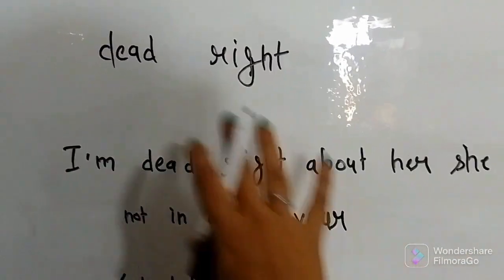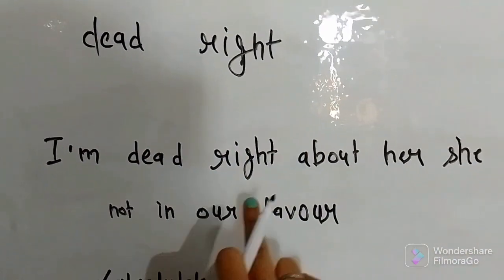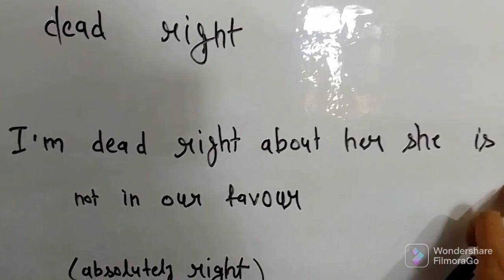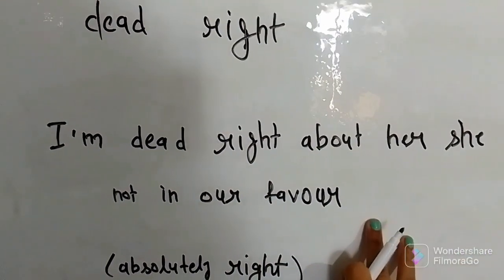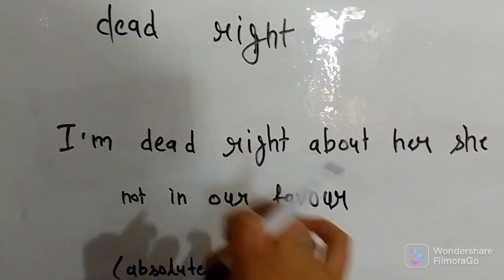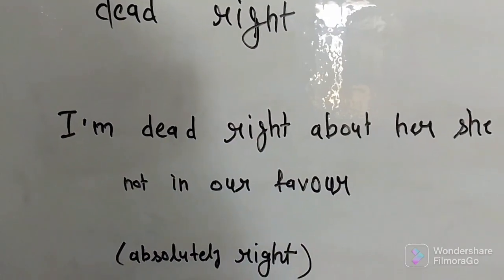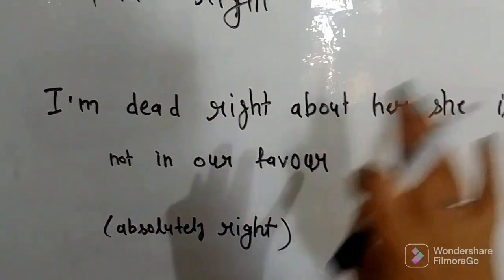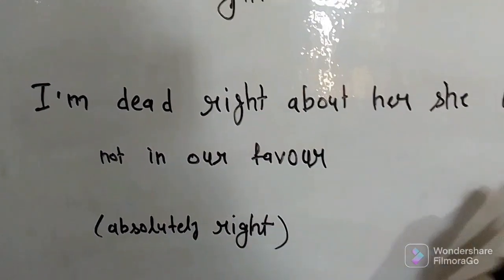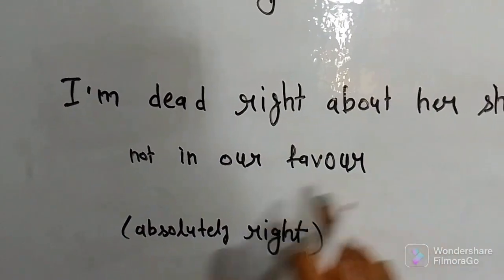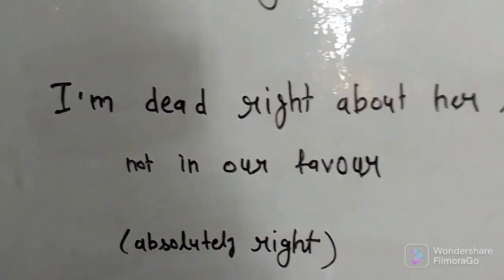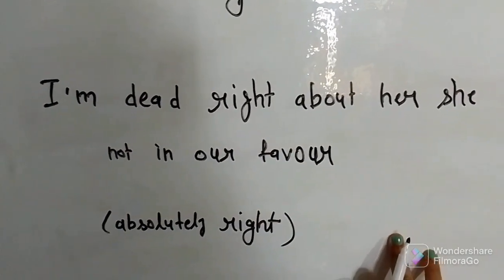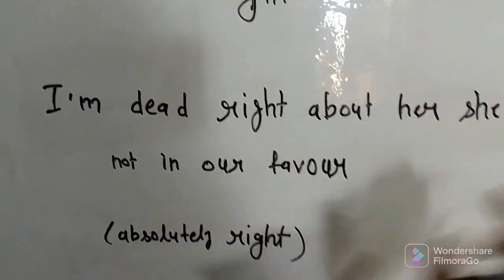The last one is 'dead right.' For example: 'I'm dead right about her — she is not in our favor.' The meaning of 'dead right' is absolutely right. I'm absolutely right about her that she is not in our favor.